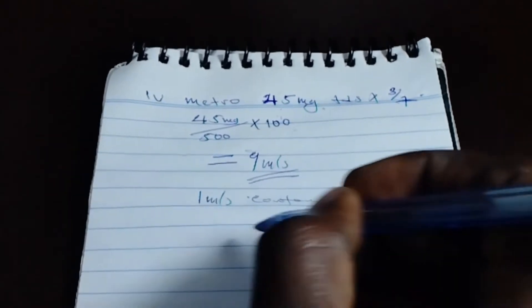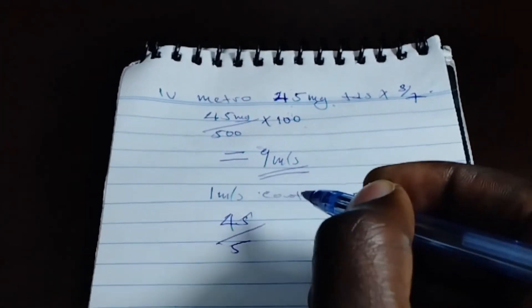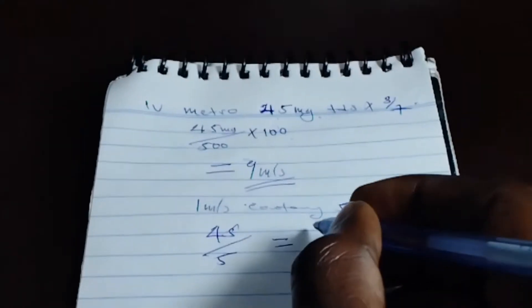So another way you just divide 45 divided by 5. Then you are going to get 9.